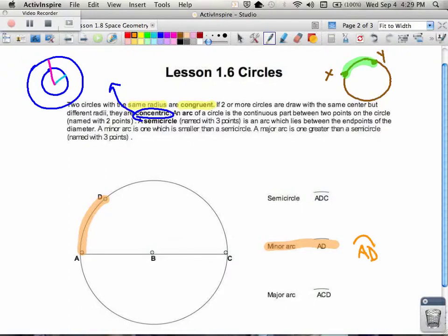If I talk about a semicircle, a semicircle ADC—remember semicircle means going halfway around the circle—so that would be this arc right here that's going halfway around the circle. This is arc ADC, which a better name is the semicircle ADC. Notice that they have to use three letters.